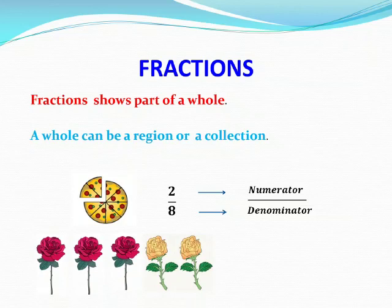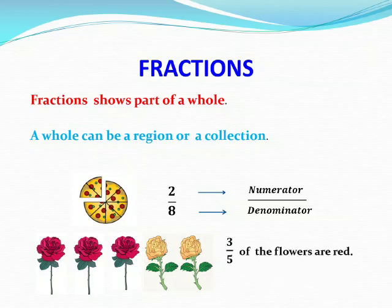Now see the next example. Here you can see a collection of flowers. How many flowers are there in this collection? 5 flowers. Out of 5, 3 are red and 2 are yellow. How to write the fraction for red flowers? Out of 5, 3 are red flowers. So we can write it as 3 by 5. Now what is the fraction for yellow flowers? 2 by 5.